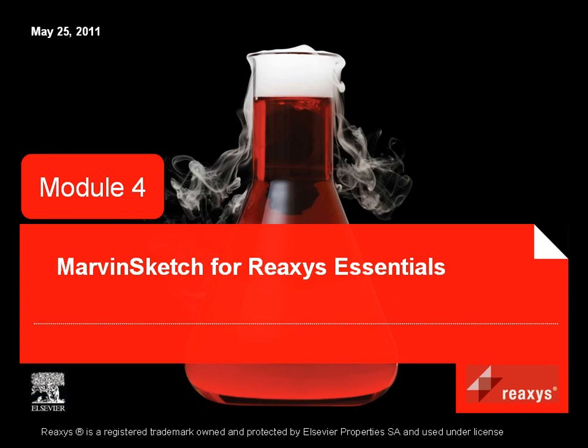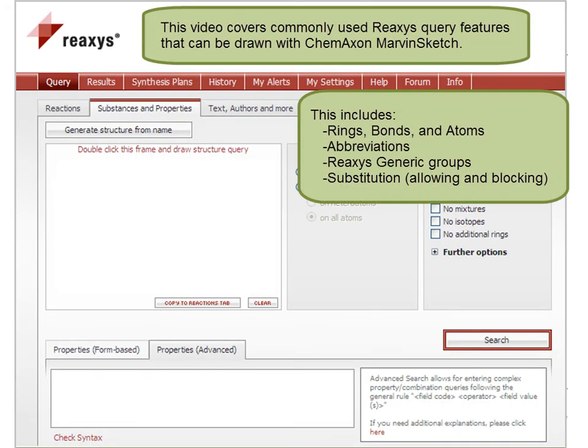Welcome! This video covers commonly used query features that can be drawn with ChemAxon MarvinSketch. This includes rings, bonds, and atoms, abbreviations, Reaxys generic groups, and allowing and blocking substitution.